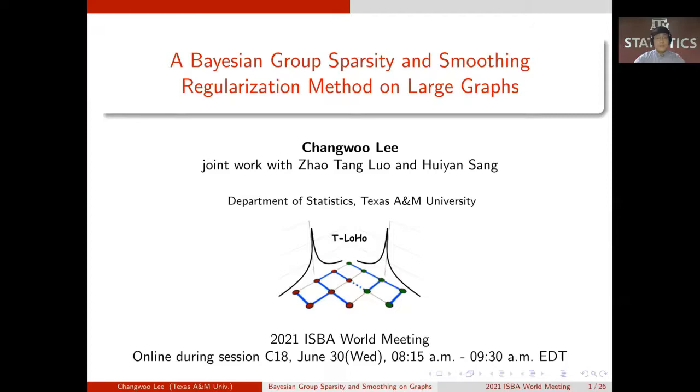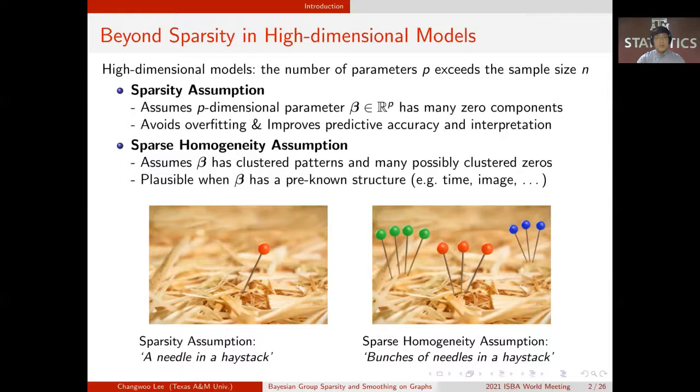Let's first talk about high-dimensional models. We call a model high-dimensional when the number of parameters p exceeds the sample size n. The most common assumption of such model is the sparsity assumption, where p-dimensional parameter beta has many zero components, so that effective dimension of beta is much smaller than p. It is useful since it avoids overfitting and improves predictive accuracy and interpretation.